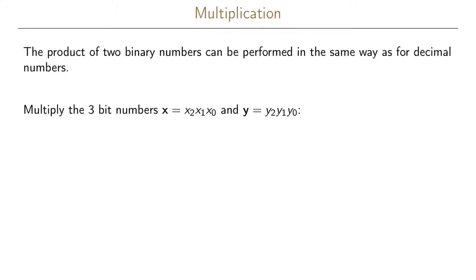In this example, we are going to multiply two numbers: x, given as x2, x1, and x0, where x0 is the least significant bit, multiplied by y2, y1, and y0. We do this exactly as we multiply ordinary numbers.